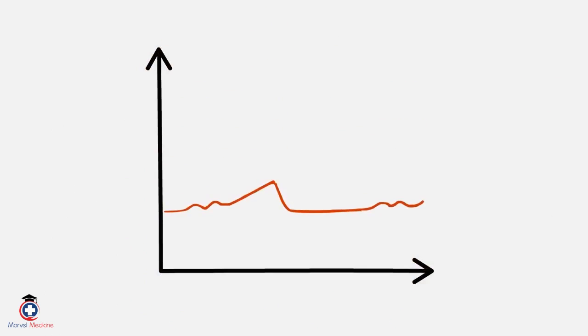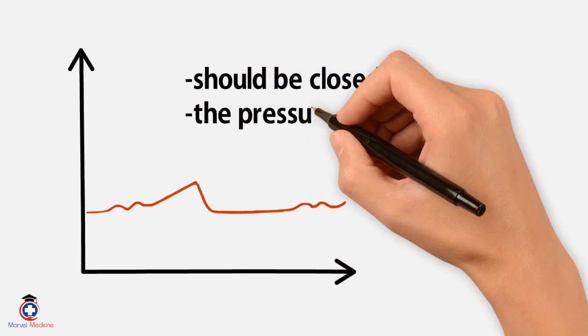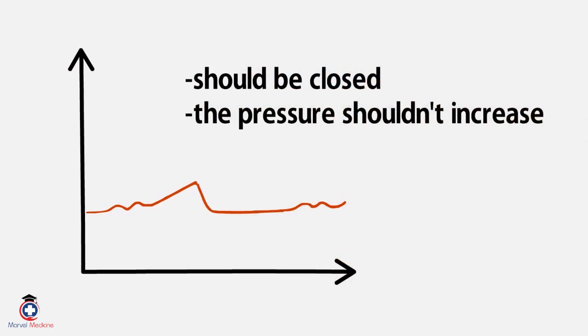Now take a look at the left atrial pressure line. Normally during systole, the valve should be closed and the pressure in the left atrium shouldn't increase.